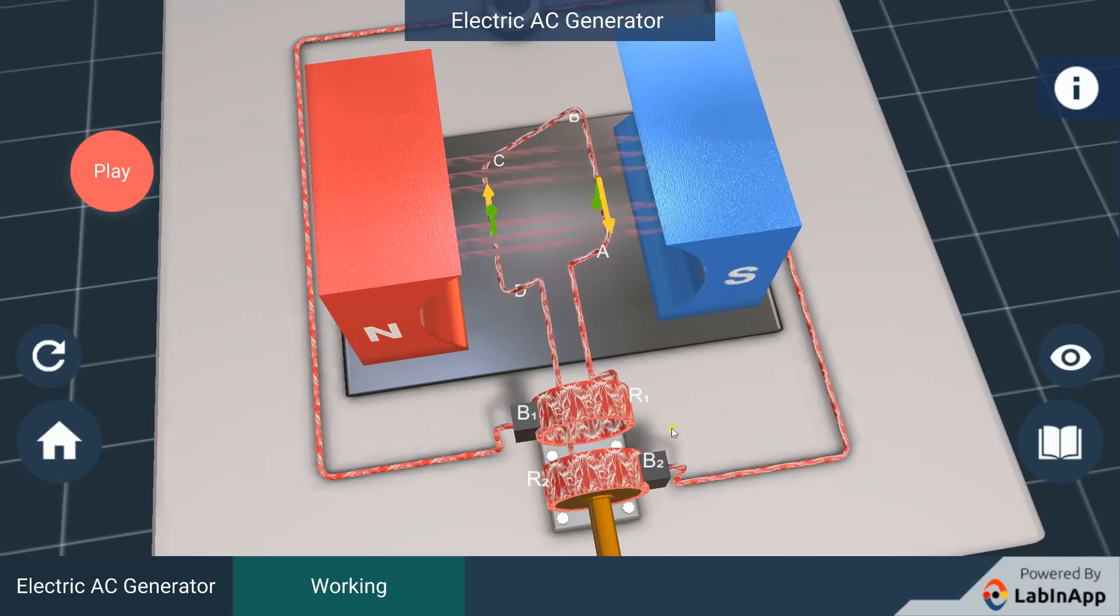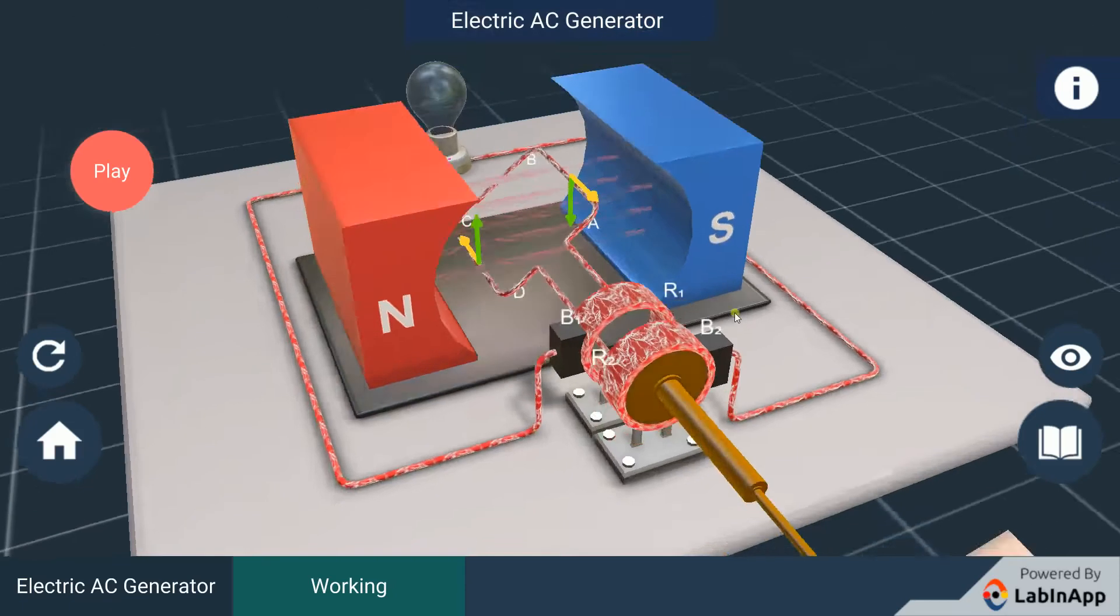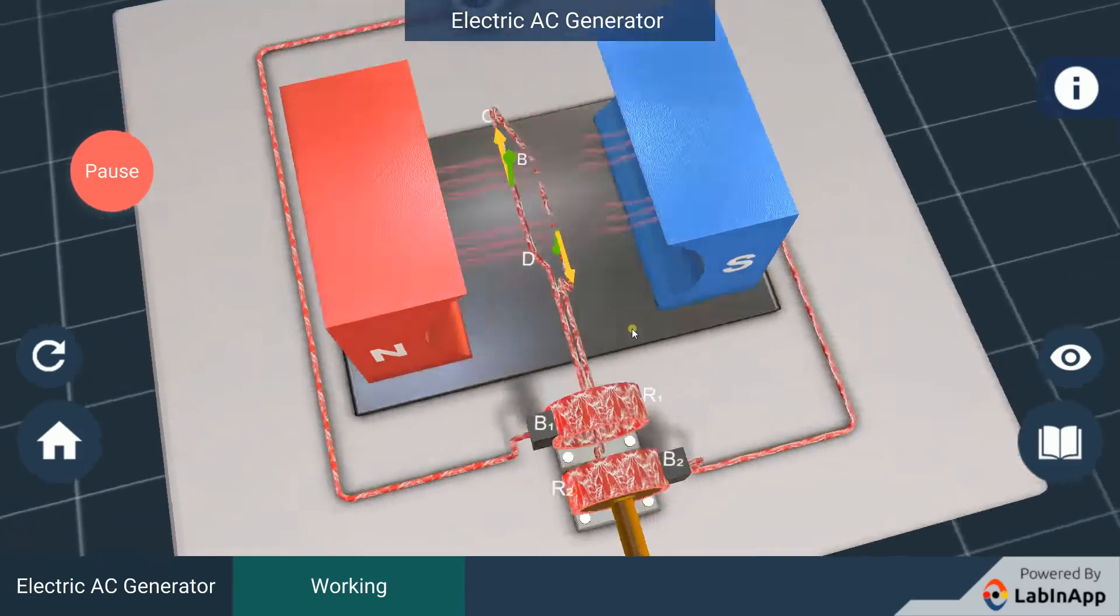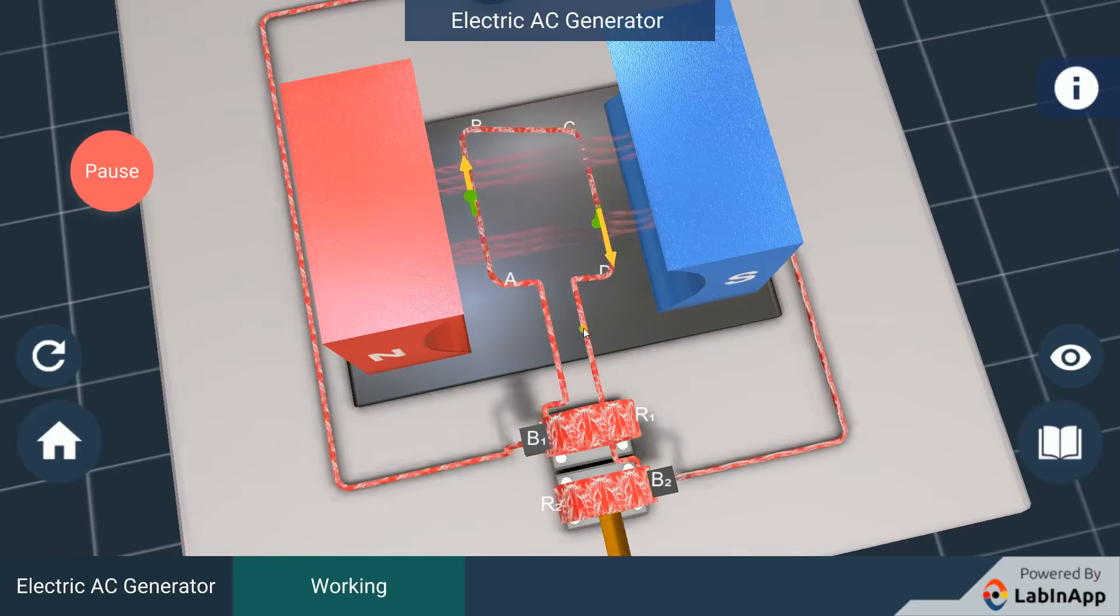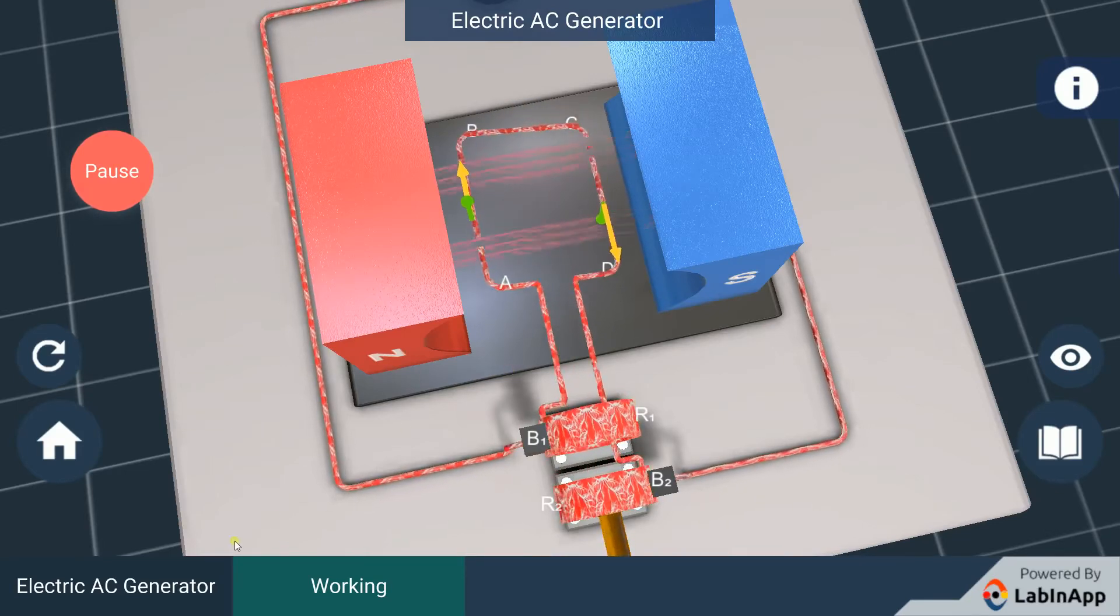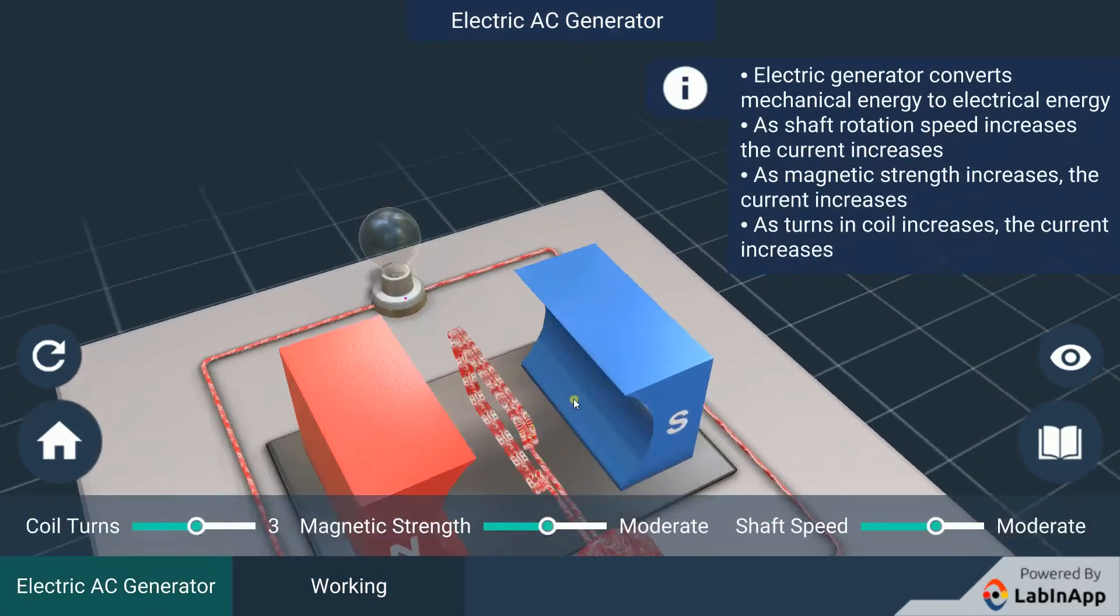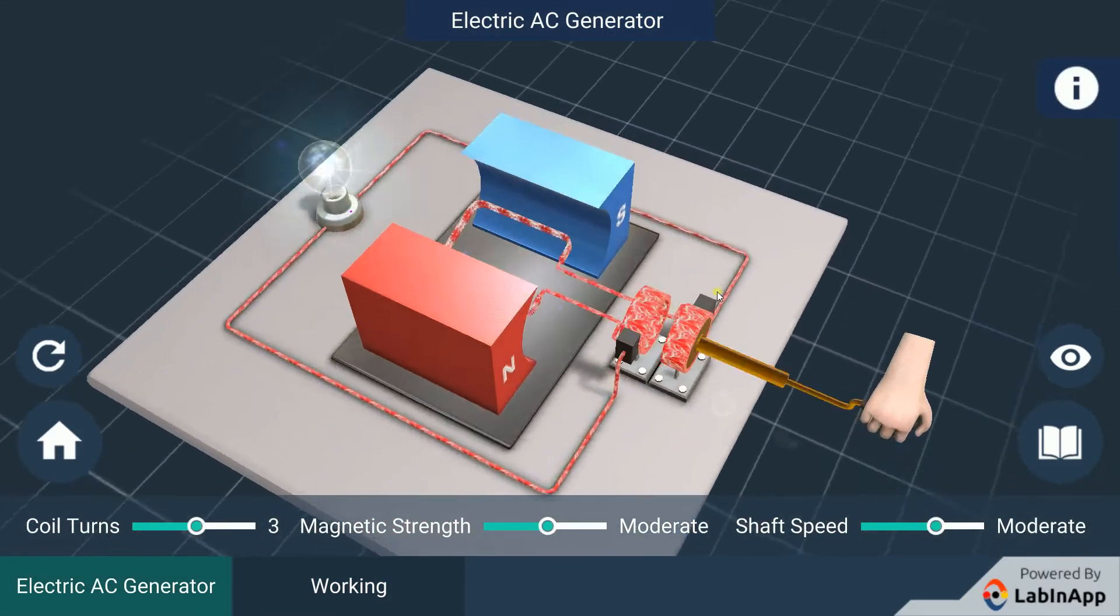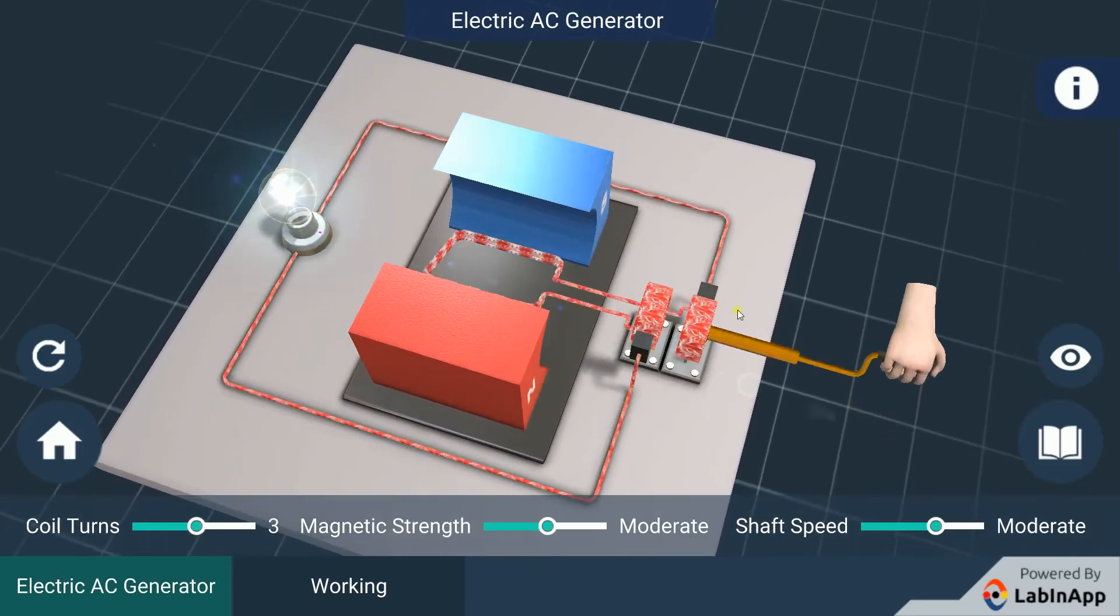Thus, after every half rotation, the polarity of the current in the respective arms changes. Such a current, which changes direction after equal intervals of time, is called an alternating current abbreviated as AC. This device is called an AC generator.